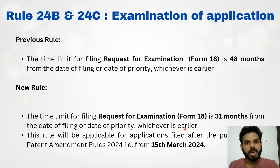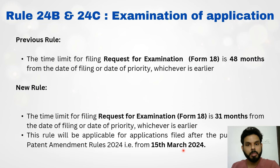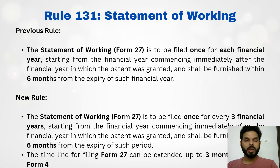This reduction in the timeline will eventually result in the patent process getting faster. Importantly, this rule will be applicable only for patent applications filed after the publication of the Patent Amendment Rules 2024, that is, after 15th March 2024. The requirement to file the request for examination within 31 months will not apply to applications filed before 15th March 2024 — only to new applications filed after that date. This is a very important point to remember.